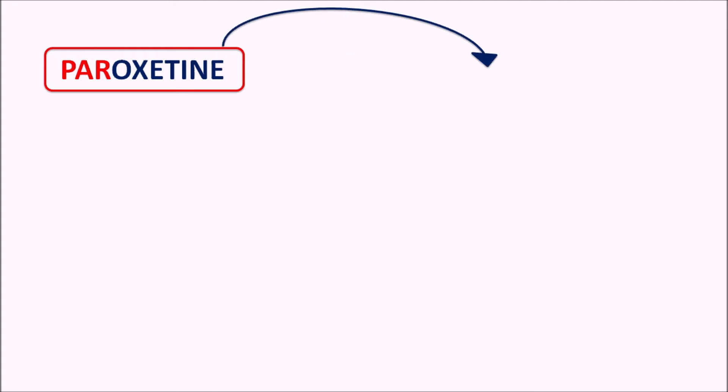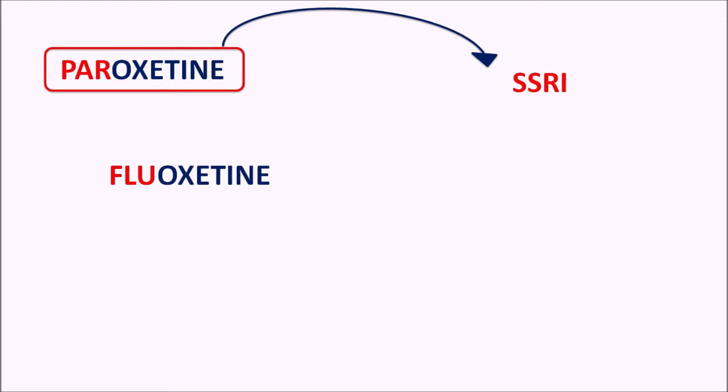Today in this video we are going to discuss about paroxetine. The suffix '-oxetine' indicates that this drug is an SSRI — Selective Serotonin Reuptake Inhibitor. We have another drug with a similar suffix, fluoxetine, which is again an SSRI.